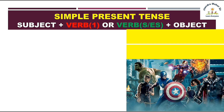So let's see simple present tense. The structure rule is: subject, then the first form — that is the present form — of the verb, then object.